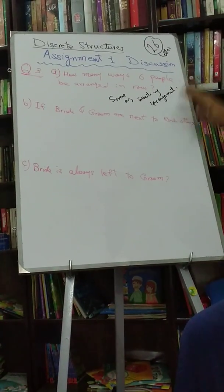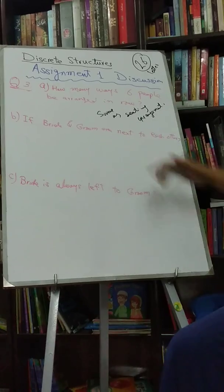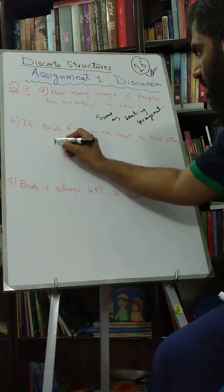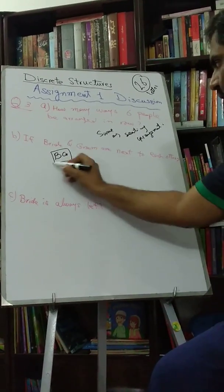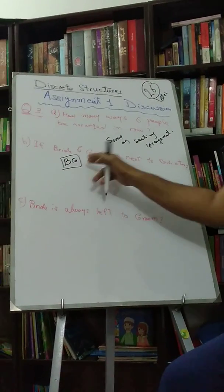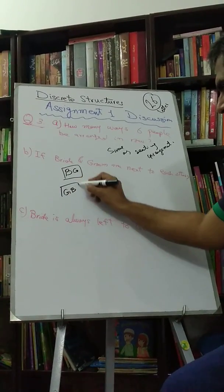So actually you will get the answer from this point as well. If bride and groom are next to each other, so bride and groom always have to be together. Consider this as one block. It could be like this, bride and groom, or it could be like groom and bride. Still they are next to each other.